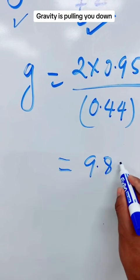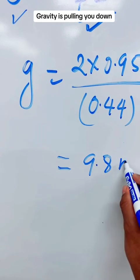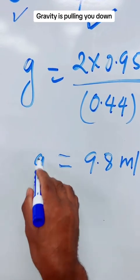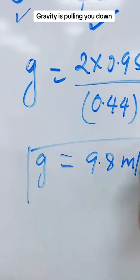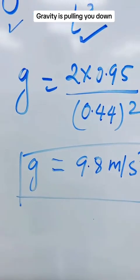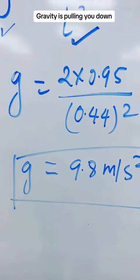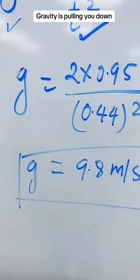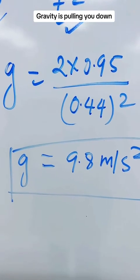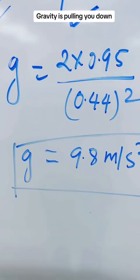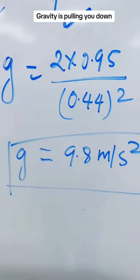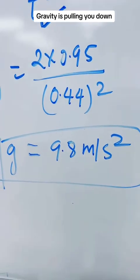I'm getting exactly 9.8 meters per second squared. So this free-fall apparatus measures time very accurately, and I can measure the distance very easily. I'm getting the exact value of acceleration due to gravity equal to 9.8 meters per second squared.